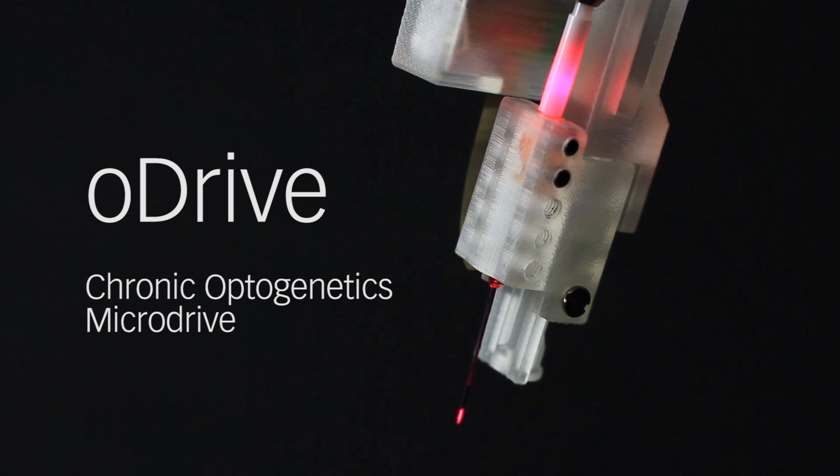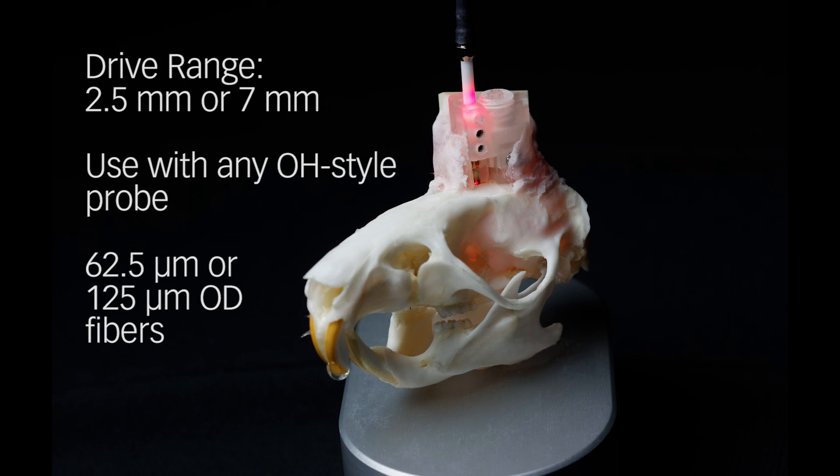The Neuronexus O-Drive combines a chronic microdrive with a Neuronexus optoelectrode to facilitate chronic optogenetics experiments. As with the standard D-Drive, the O-Drive is available in two drive ranges: 2.5 mm and 7 mm.